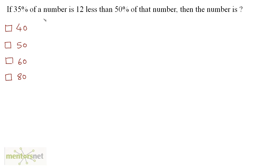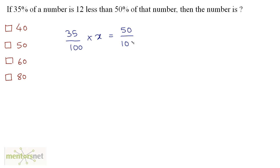If 35% of a number is 12 less than 50% of that number, then this number is? Let this number be x. We have 35 upon 100 times x, and it is 12 less than 50% of that number, so it equals 50 upon 100 times x minus 12.